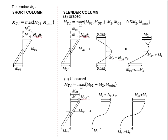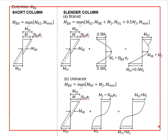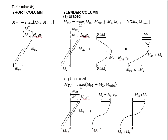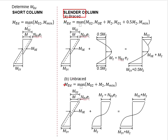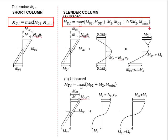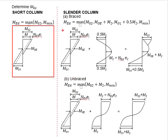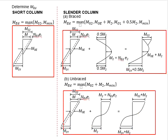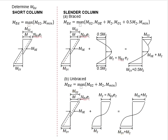Now let us look into the calculation steps to determine the design moment for different types of columns. There are three main types of columns: short columns, slender braced columns, and slender unbraced columns. The design moments of the columns are given in these equations, which can be graphically represented by these diagrams. Now let us look into the diagrams one by one.